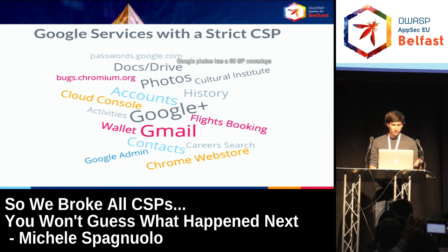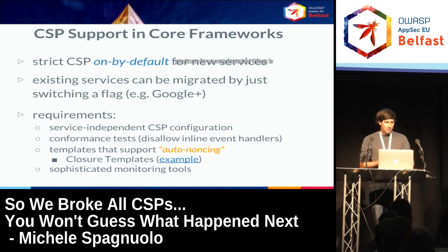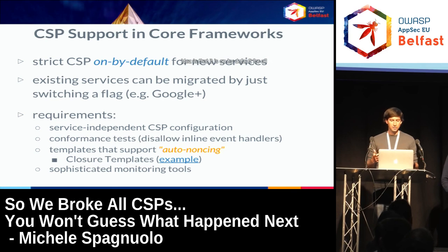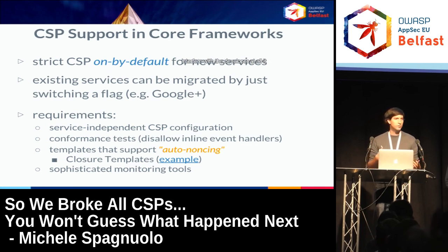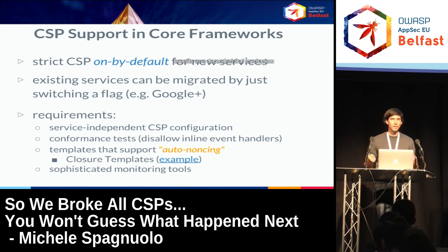Examples of products with strict CSP now include Google Photos, Google+, and passwords at google.com — sensitive domains. One of the most important things we did was build strict CSP support into core frameworks so it's on by default for all new services. Developers don't need to know anything about CSP — it's enabled out of the box and ideally doesn't interfere with the developer at all. Rolling out strict CSP is essentially zero effort once it's baked into the framework.